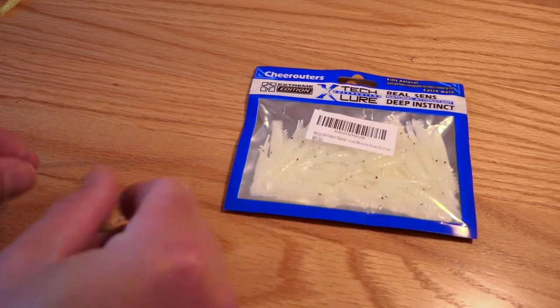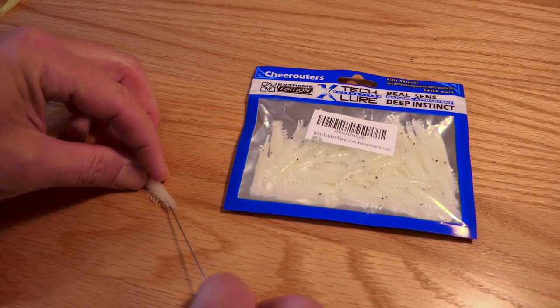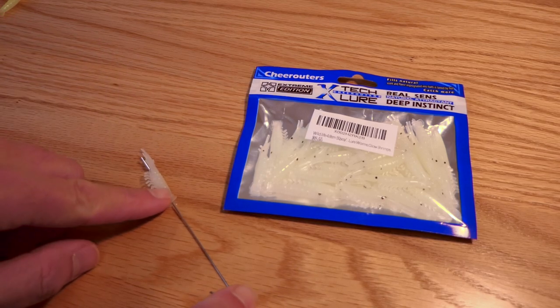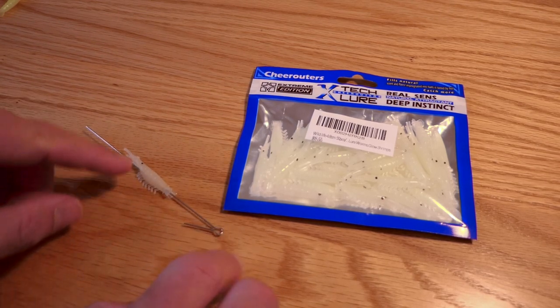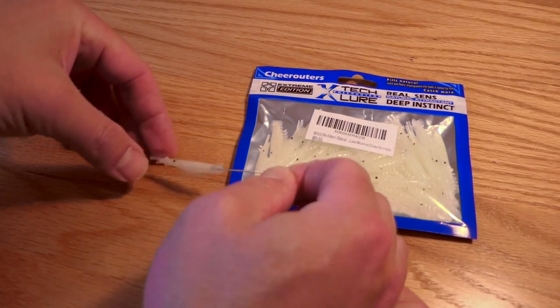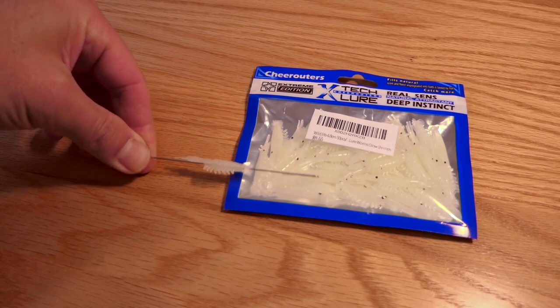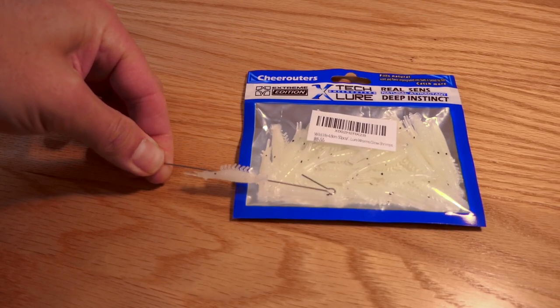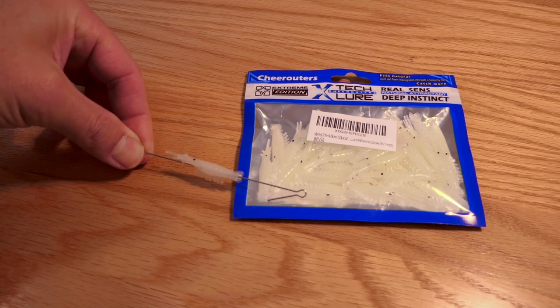I'll just show you how that works here. So on the back of the shrimp, there's actually a little hole. You can just slide your line through there, and then you can tie it up. I just wanted to have a wire there to kind of show you how that works. So it's easy to do, you don't have to thread them or have a needle or anything.